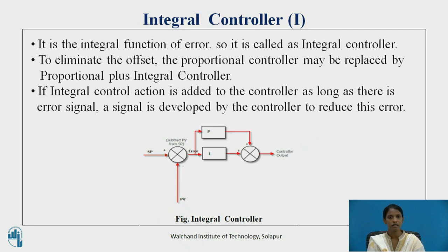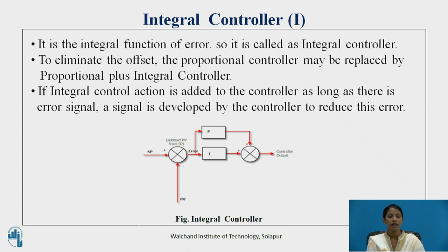Next, the integral controller, also known as the I controller, is a function of the error signal. To eliminate the offset generated by the proportional controller, the proportional controller is replaced by a proportional plus integral controller. If integral control action is added to the controller, as long as there is an error signal, a signal is developed by the controller. In place of the controller, two controllers are used — proportional and integral — and we get a controlled output which is the output of both.